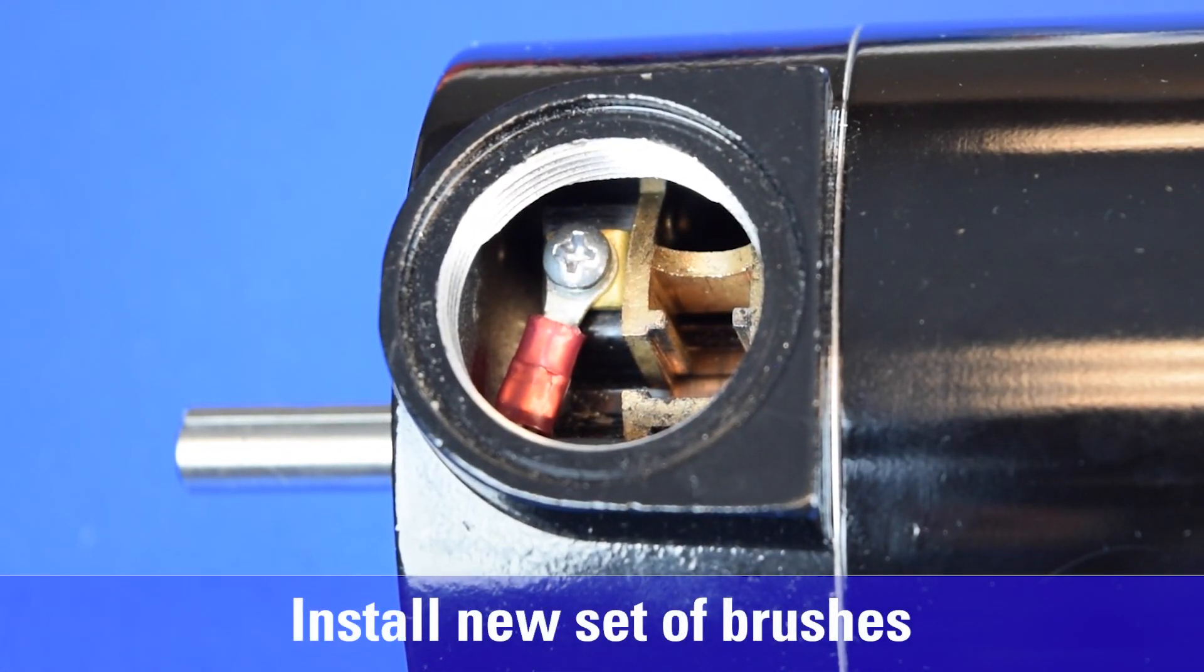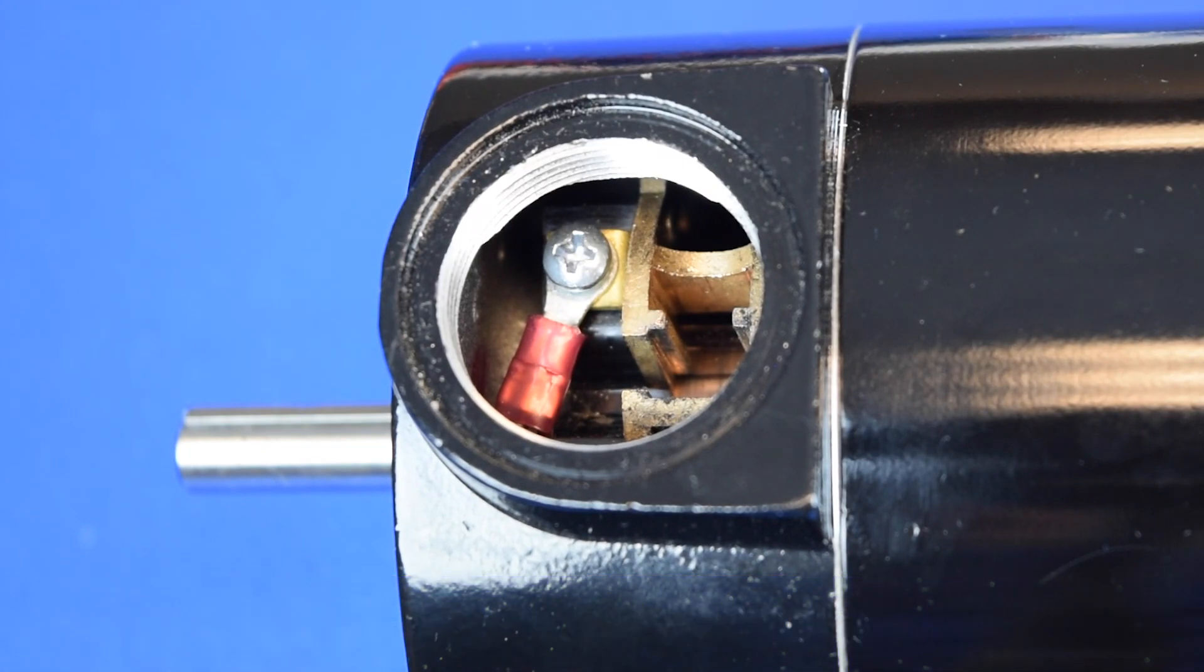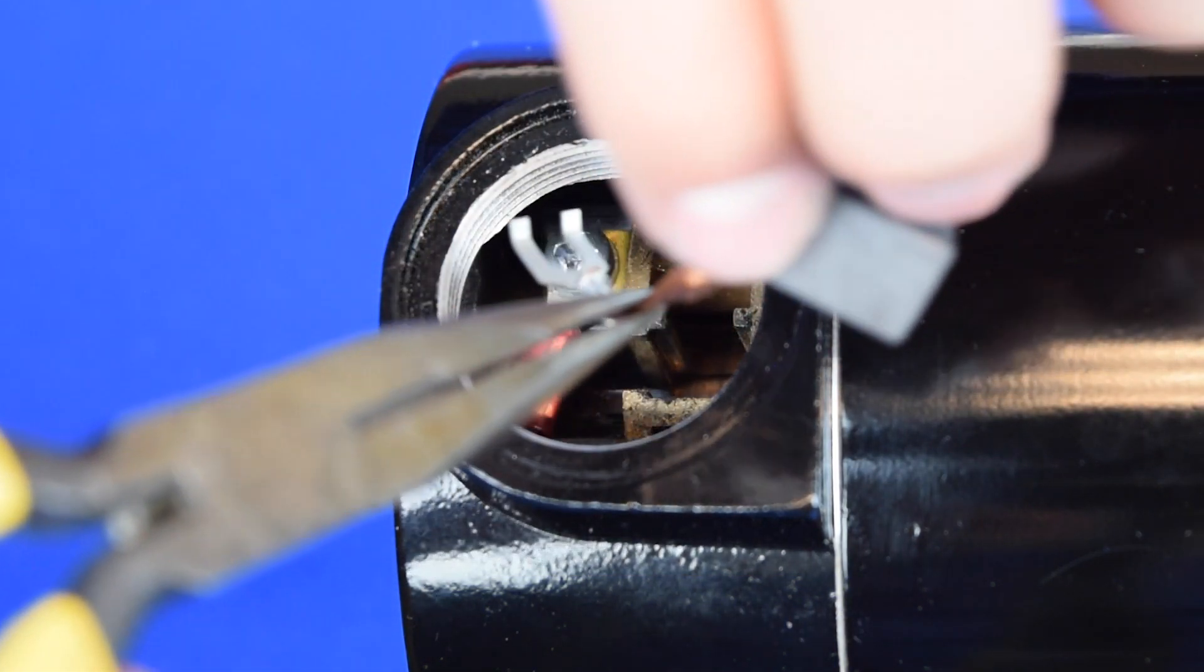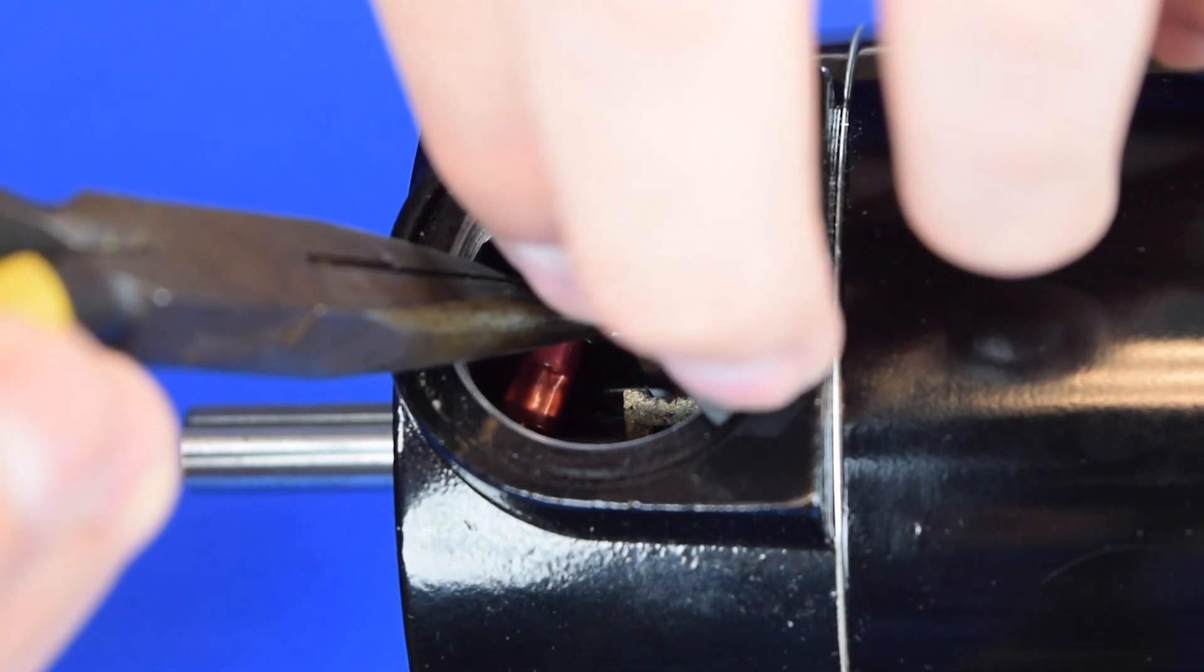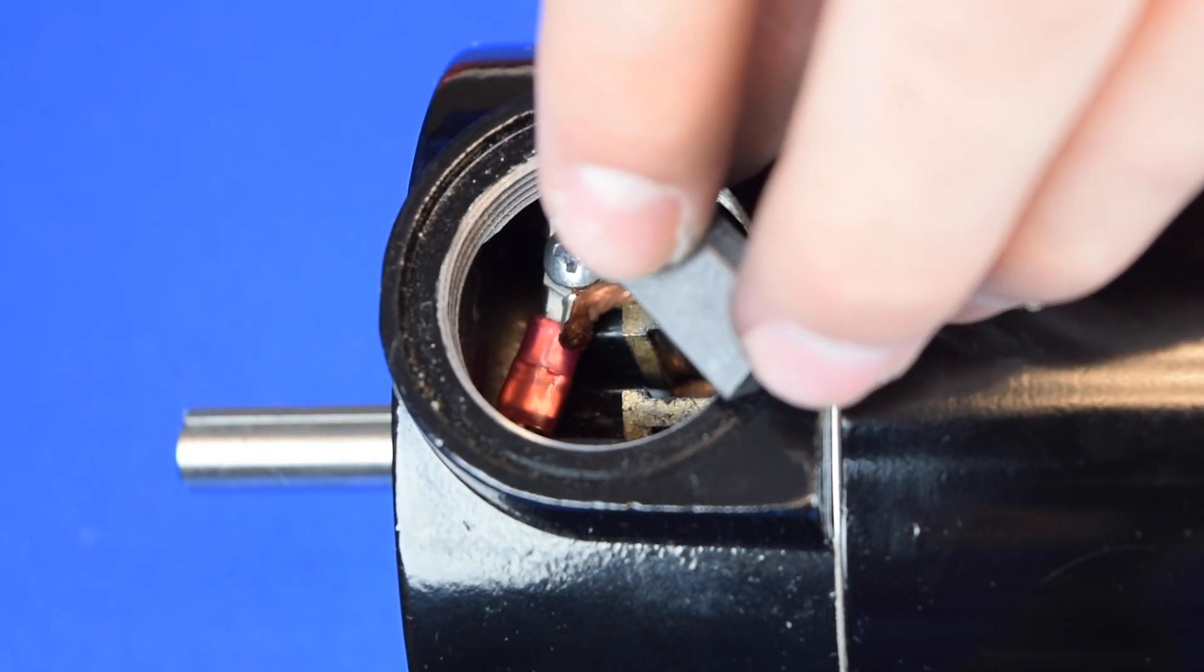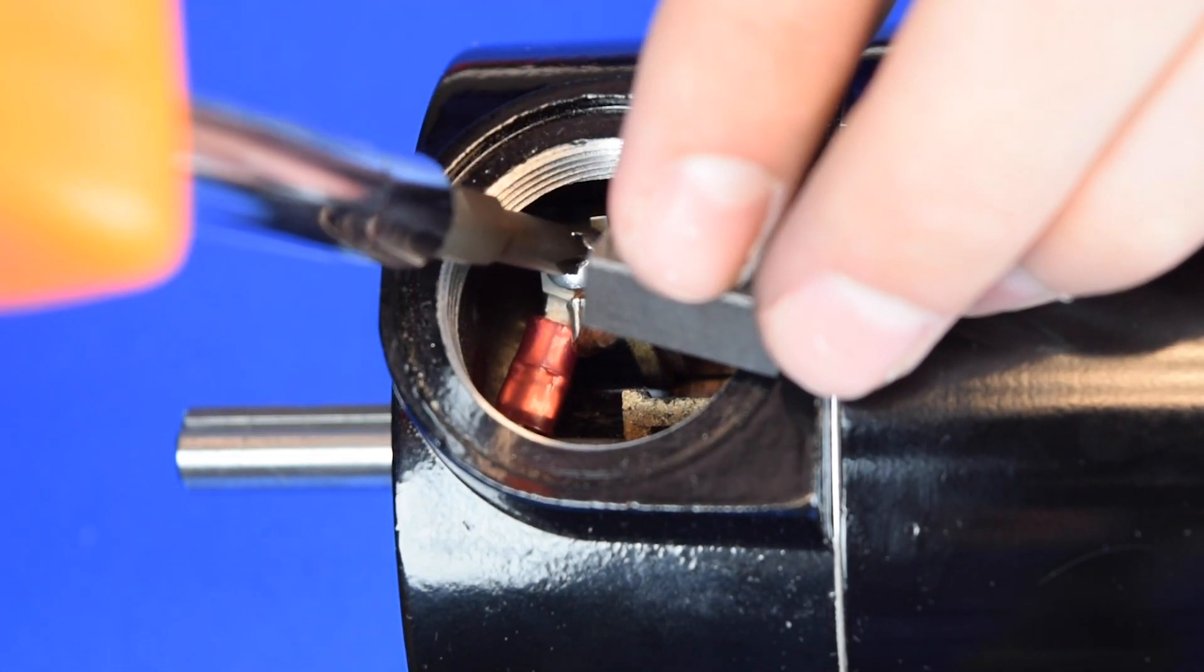Now that the motor is cleaned out and the old brushes are removed, we'll proceed to installing the new set of brushes and springs. Position the terminal of the new brush fully under the screw head on the brush box and tighten the screw.